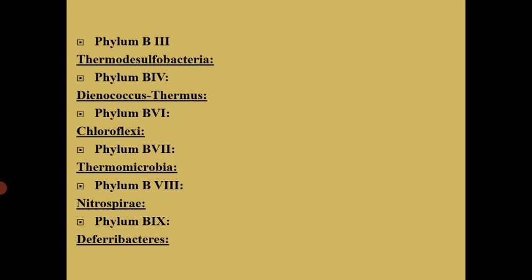Phylum B3 Thermodesulfobacterium: This phylum contains one class and two genera, Thermodesulfobacterium and Thermodesulfatator. Bacteria are anaerobic, thermophilic and sulfate reducing. Phylum B4 Deinococcus-Thermus contains one class. These bacteria are gram-positive and extraordinarily radiation resistant.